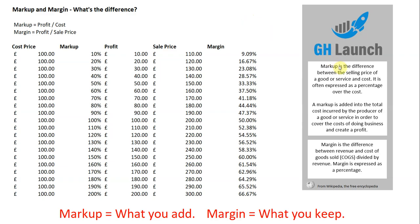Markup is the difference between the selling price of a good or service and cost. It is often expressed as a percentage over the cost. A markup is added into the total cost incurred by the producer of a good or service in order to cover the costs of doing business and create a profit.